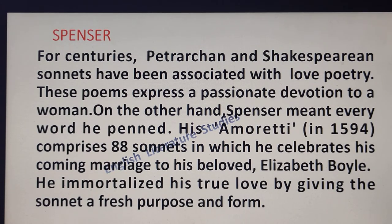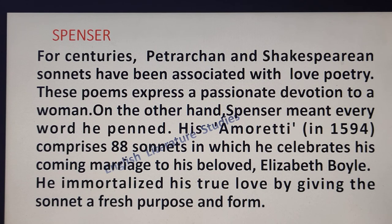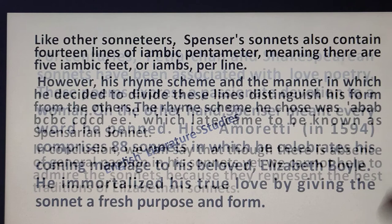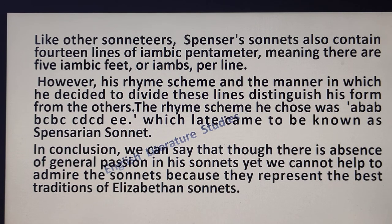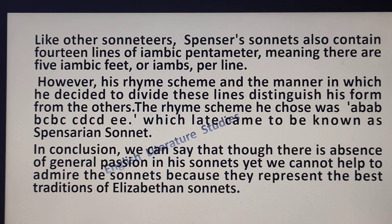The next sonneteer I will discuss is Edmund Spenser. For centuries, Petrarchan and Shakespearean sonnets have been associated with love poetry — these poems express a passionate devotion to a woman. Spenser, on the other hand, meant every word he penned. His Amoretti comprises 88 sonnets in which he celebrates his coming marriage to his beloved Elizabeth. He immortalized his true love by giving the sonnet a fresh purpose and form. Like other sonneteers, Spenser's sonnets also contain 14 lines of iambic pentameter, meaning there are 5 iambic feet or iambs per line. However, his rhyme scheme and the manner in which he divided these lines distinguish his form from the other sonneteers.